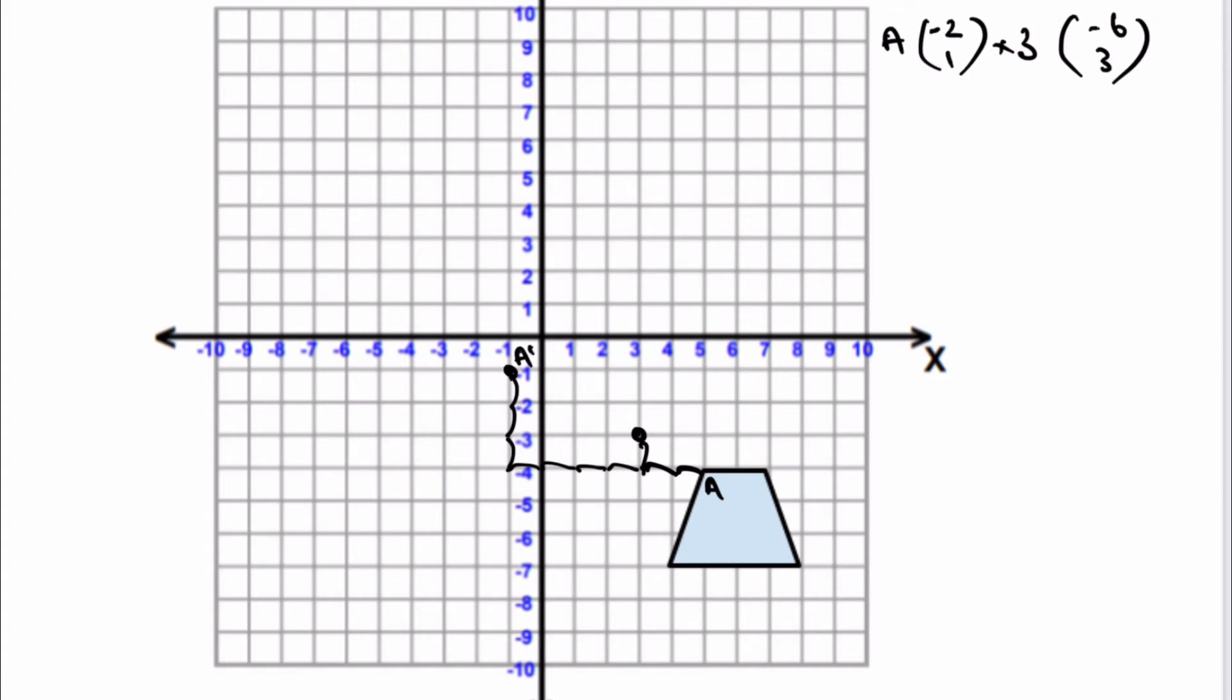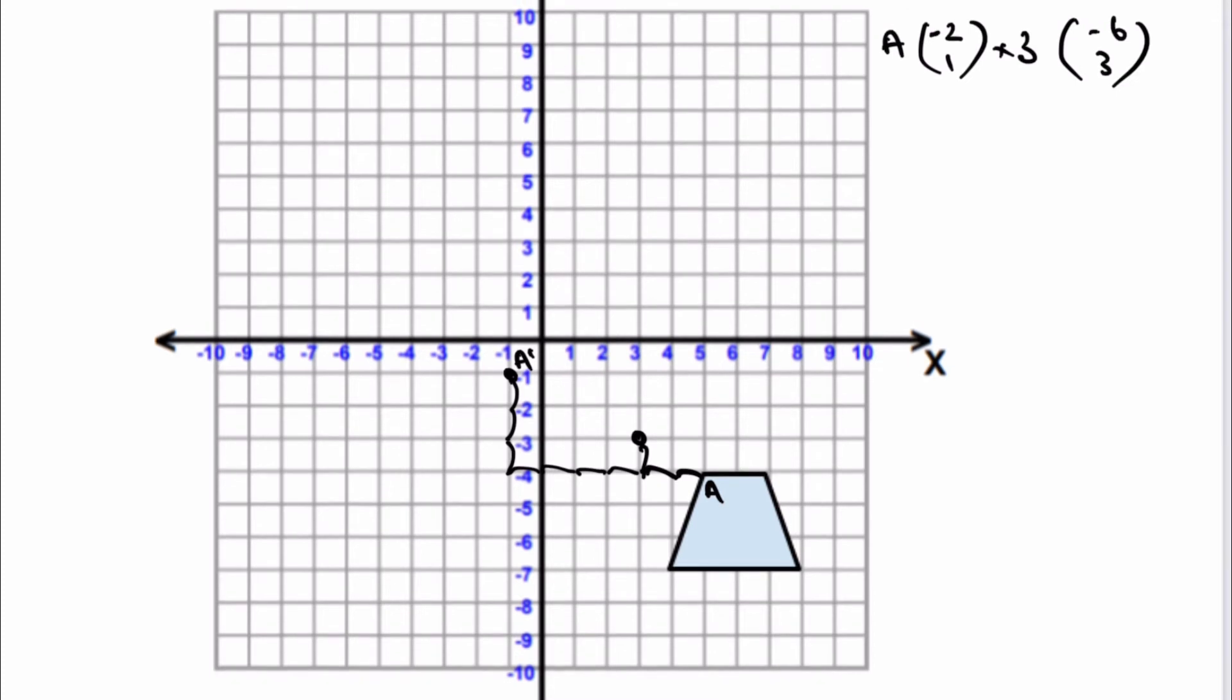I'm going to do the same for all the other points. If I said that this point here was B, then the vector which it moves is going to be minus four and also one. Multiply that by three and that's going to give me minus 12, three. So if I come along to minus 12 and then I go up by three, I'm going to get to this point here, which is going to be effectively B prime.